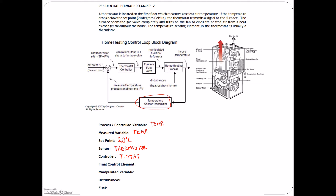In this case it's a natural gas furnace, so our final control element — depending on how you look at it — could be the gas valve or the blower motor, as there are multiple stages to furnaces. The manipulated variable is what we're changing. In this case we're manipulating gas flow by opening and closing that valve. If you're talking about the blower motor, then we're manipulating airflow through the ducts. The fuel: we're sending current to either the valve or the blower motor.